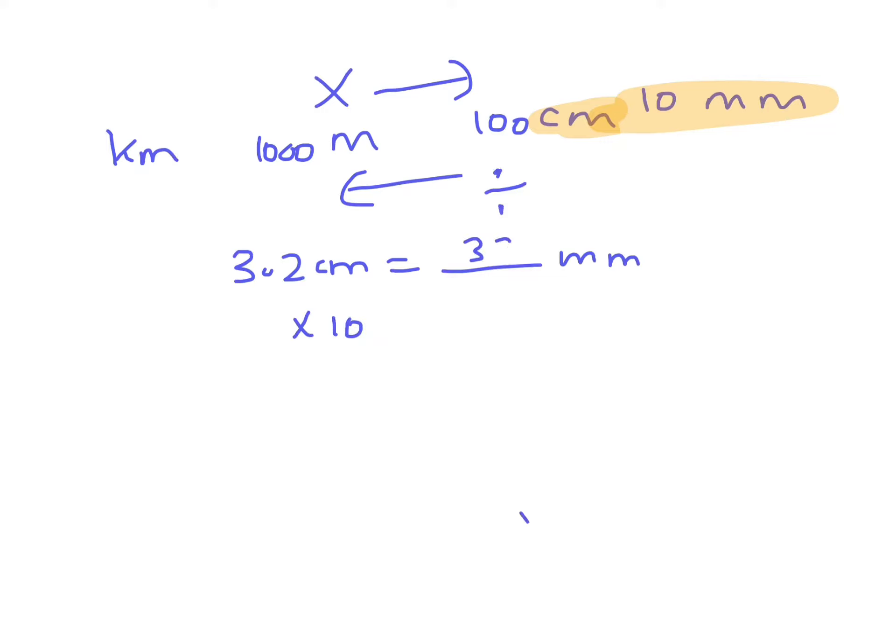But if I make it 3.2 meters squared, then it would be times 10 times 10. So you actually move it twice as many zeros - so it's 320 centimeters squared.